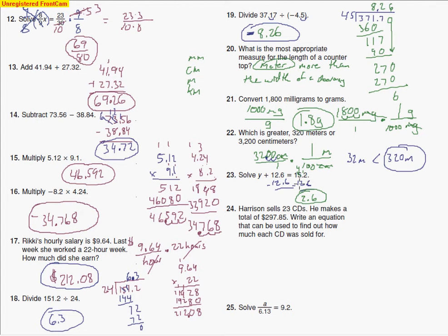And the next problem says that Harrison sells 23 CDs. He makes a total of $297.85. That's right in the equation. It can be used to find out how much each CD is sold for. So this is the unknown.